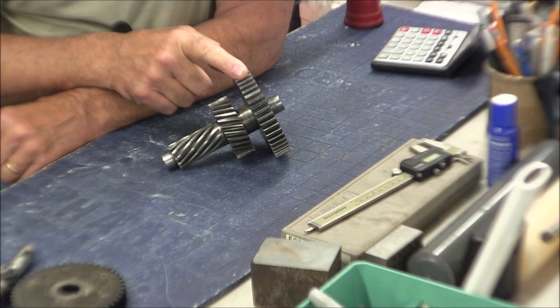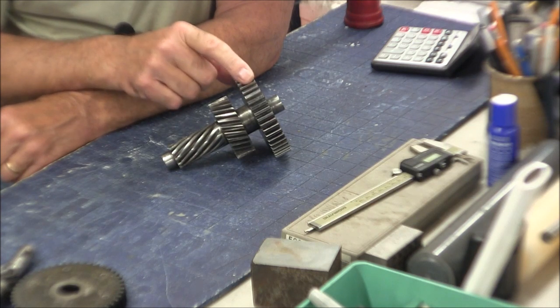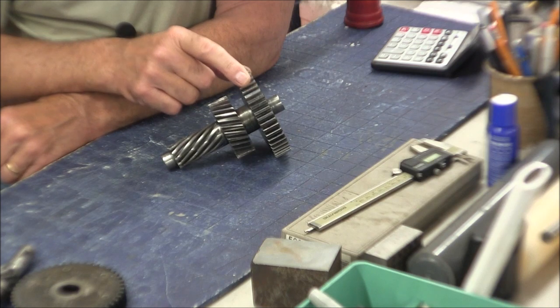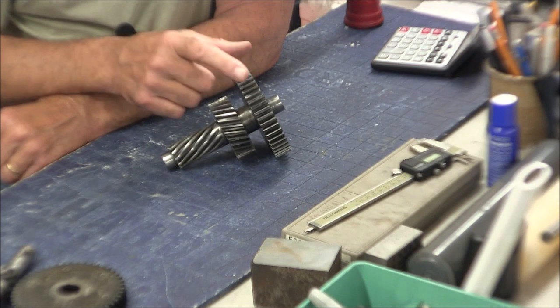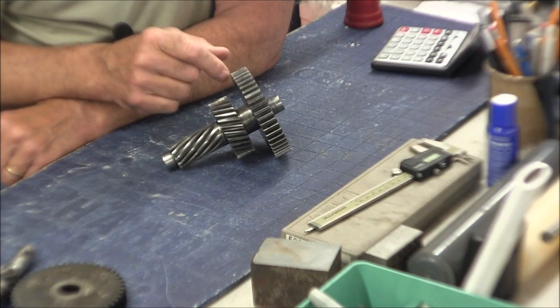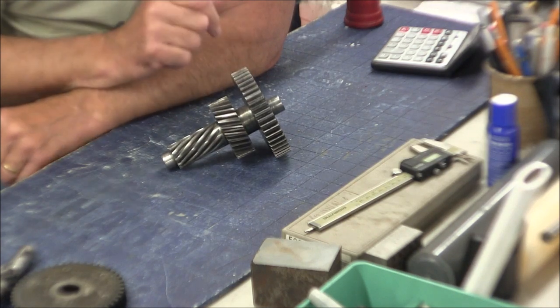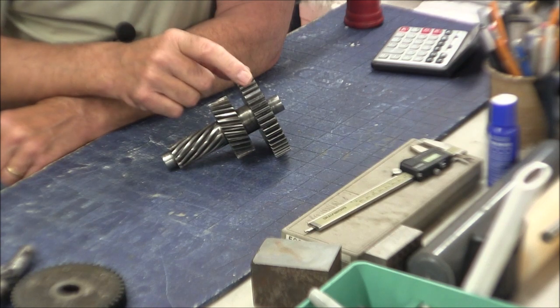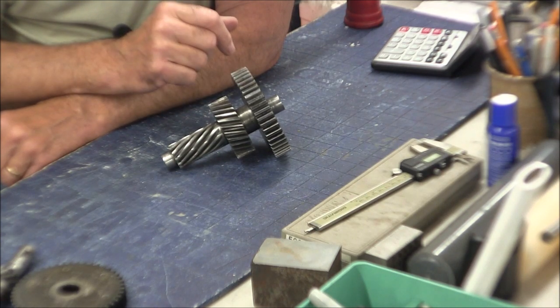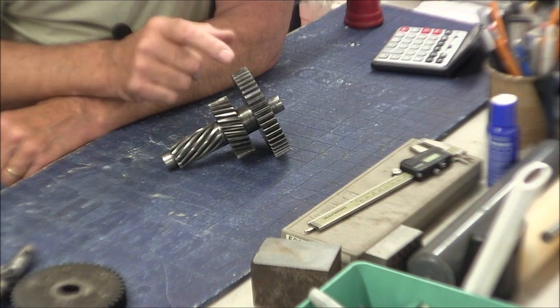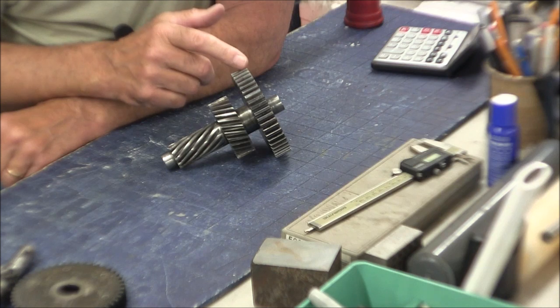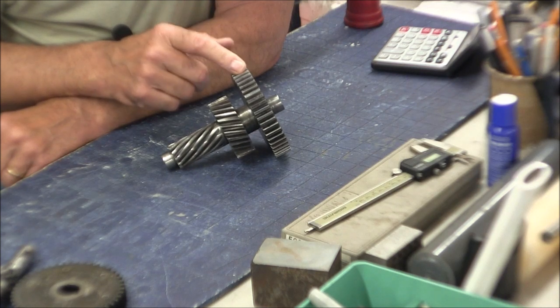So now this gear has been heat treated and it's up around, if I remember right, about 45 to 46 C on the Rockwell scale, which is going to be too hard really to cut with my high speed gear cutter. You know, I might be able to get away with it, but I know I would destroy the cutter in the process.